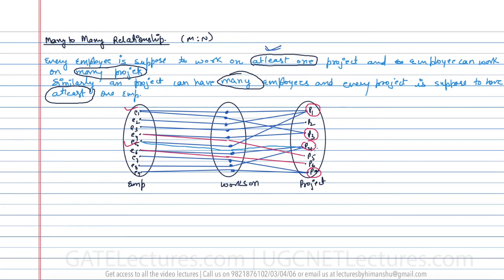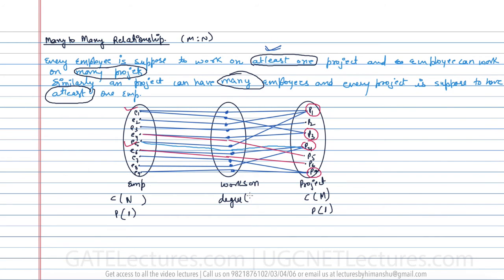Now we give the cardinality ratio and participation representation. The cardinality of employee — the maximum number of relationships an entity can participate in — is N. The participation of employee is one, since every employee must work on at least one project. The cardinality of project is M (many), and the participation of project is one. The degree of the relationship 'works on' is two.